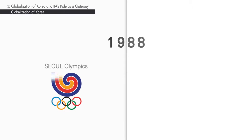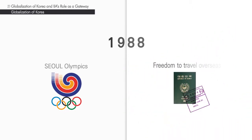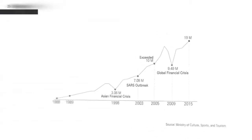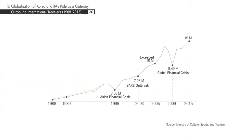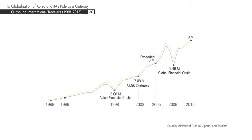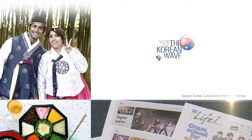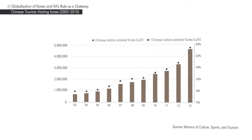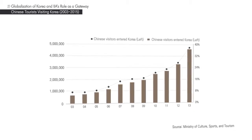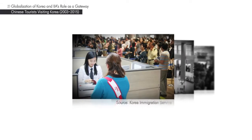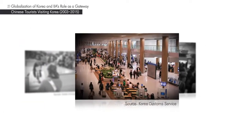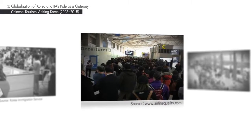The globalization of Korea started in the late 1980s when Seoul hosted the 1988 Olympics and the Korean public was given the freedom to travel overseas. This period marked an explosive demand increase in outbound international travelers. Now, due to the popularity of Korean culture, inbound travelers have also increased. In particular, a large number of Chinese people visit Korea for leisure and shopping, and the majority of these international passengers use Incheon International Airport for their travels to and from Korea.